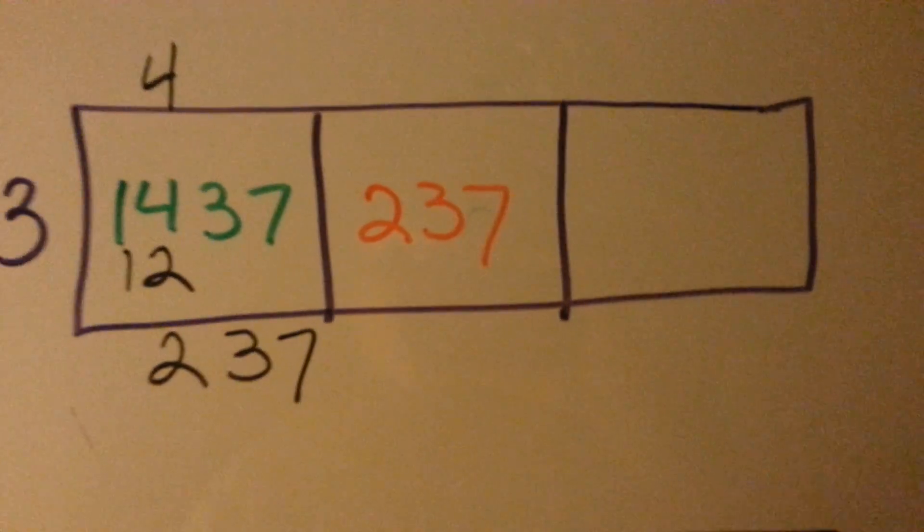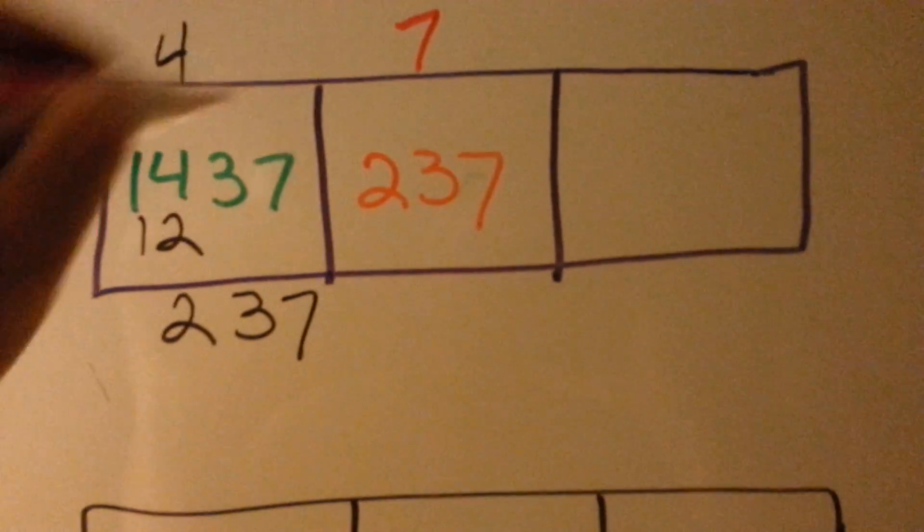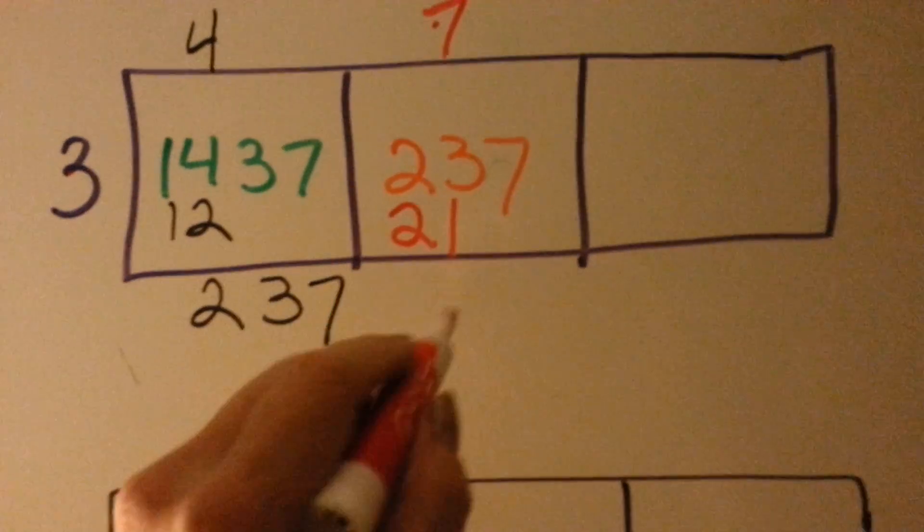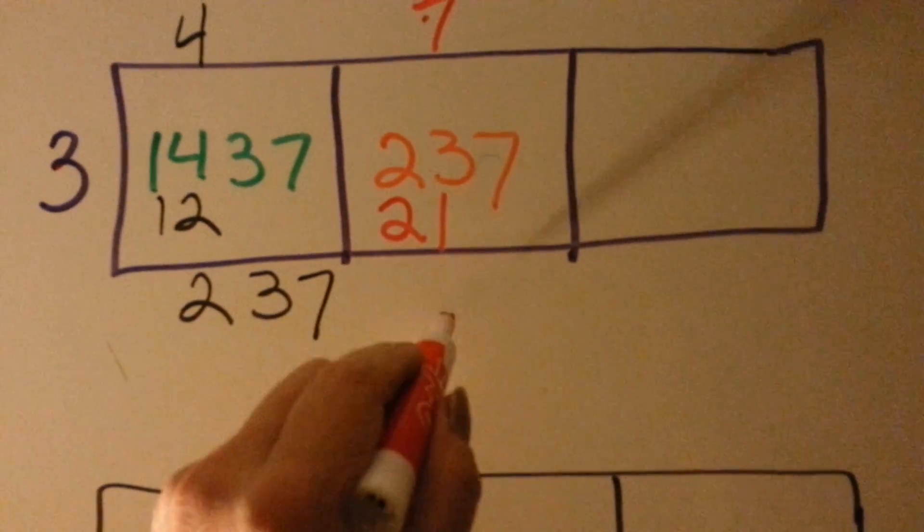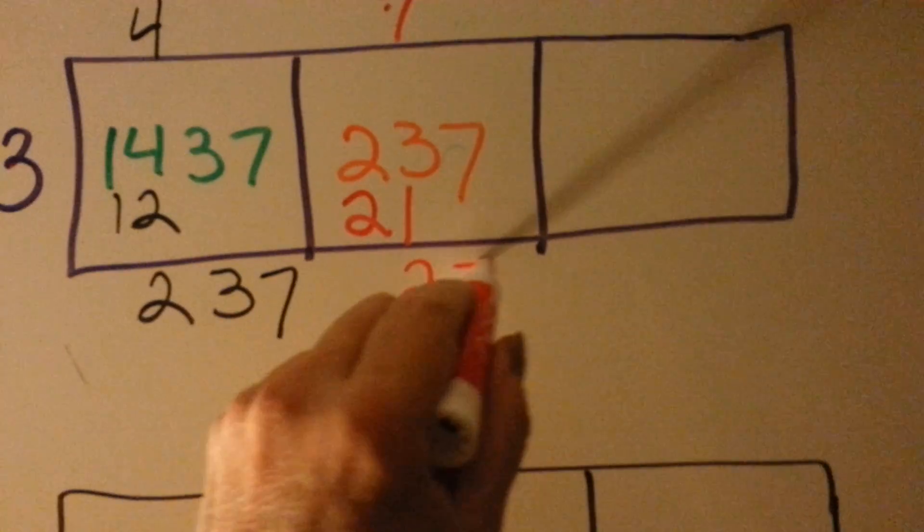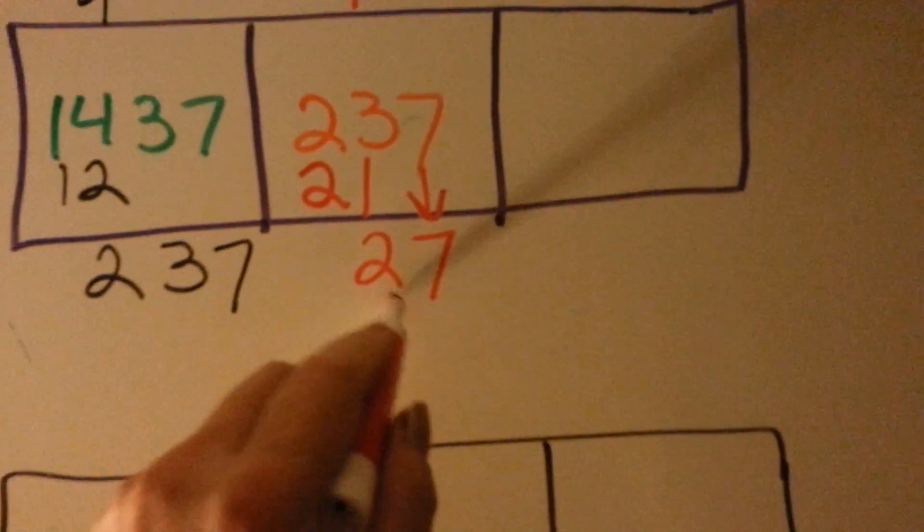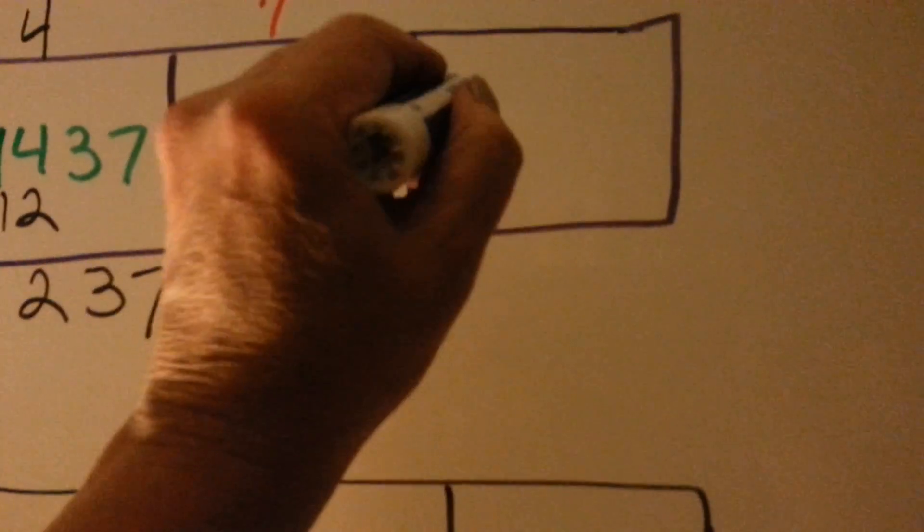So, we put the 7 above the 3, and we say 3 times 7 is 21, and now we do our subtraction. 3 take away 1 is 2, and we drop down the 7. Now we take this 27, and we put it into the last box.